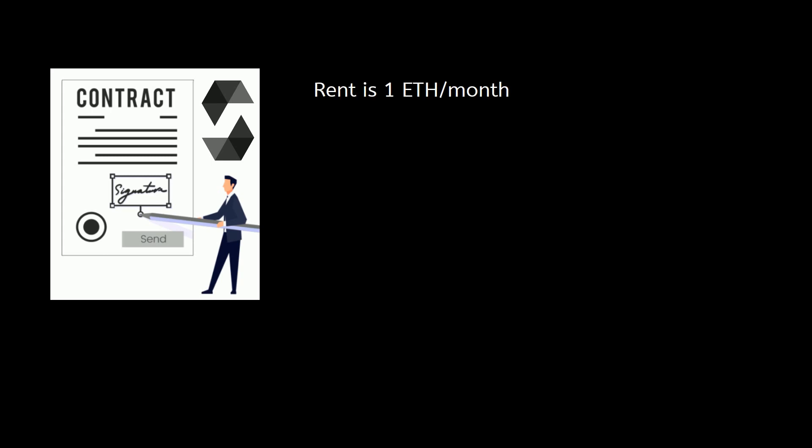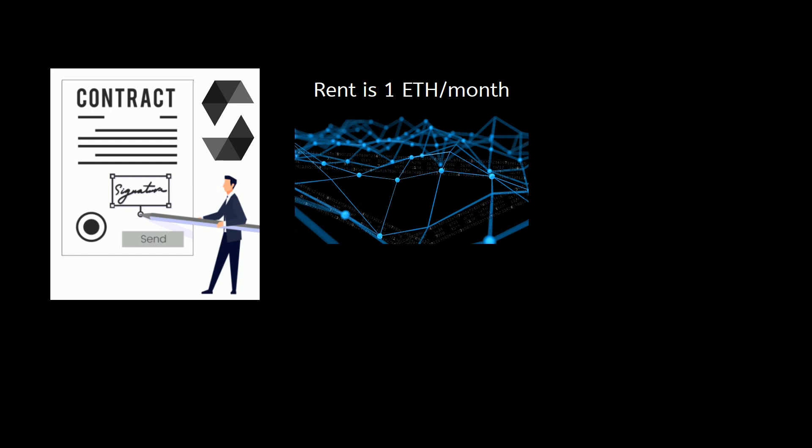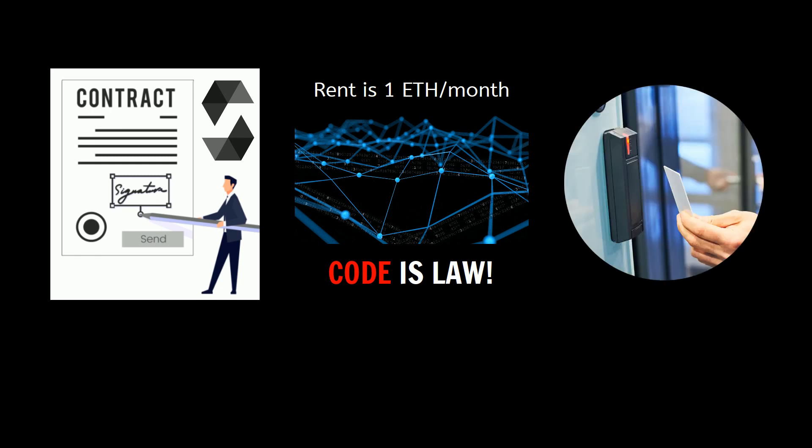Let's wrap up this video by going back to our example. You write the contract in Solidity. The contract defines a bunch of statements and actions — for example, the rent is one Ether per month. Then you deploy it on the network. Once it's executed, it becomes immutable, so no one, even the author, can change it. The code is law. The network self-checks if the money has been received or not. If not, the action you defined is to deactivate the card so the tenant cannot enter the property.